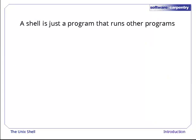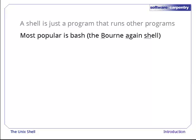A shell is just a program like any other. The only thing that's different about it is that its job is to run other programs, rather than to do calculations itself. The most popular Unix shell is Bash, the born-again shell. It's called that because it's derived from a shell written by Stephen Bourne — this is what passes for wit among programmers.